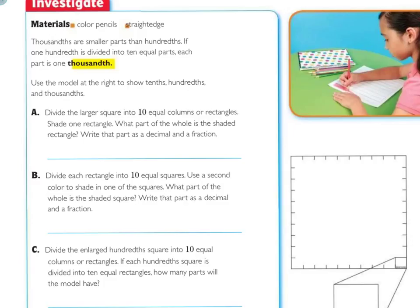You will walk through this with me, and this is the model at the right. Right now, we are only using the bigger square. It says, divide the larger square into ten equal columns or rectangles. Columns go vertically up and down. Shade one rectangle. Do that. Press pause.